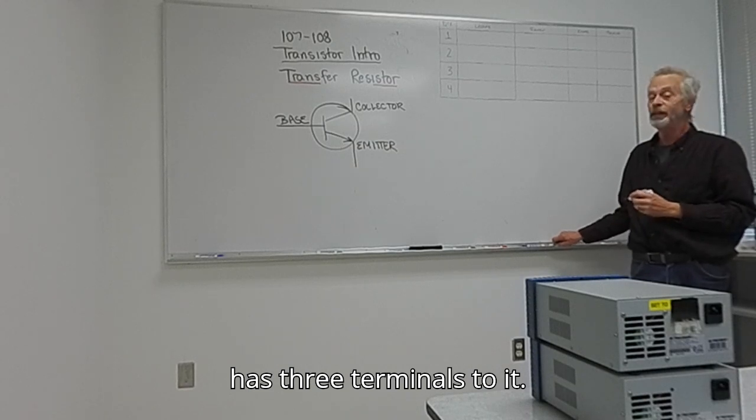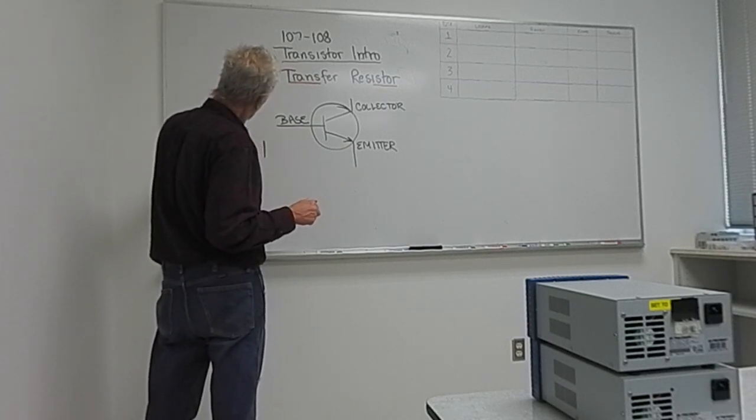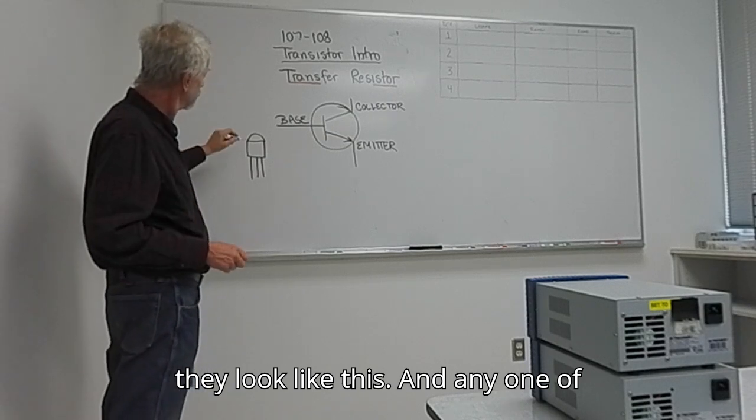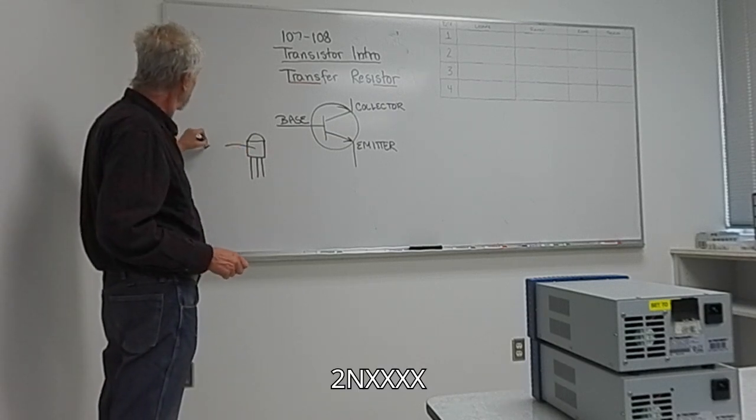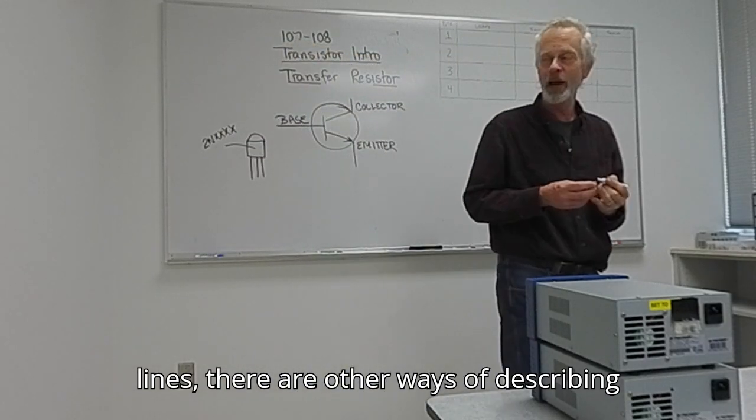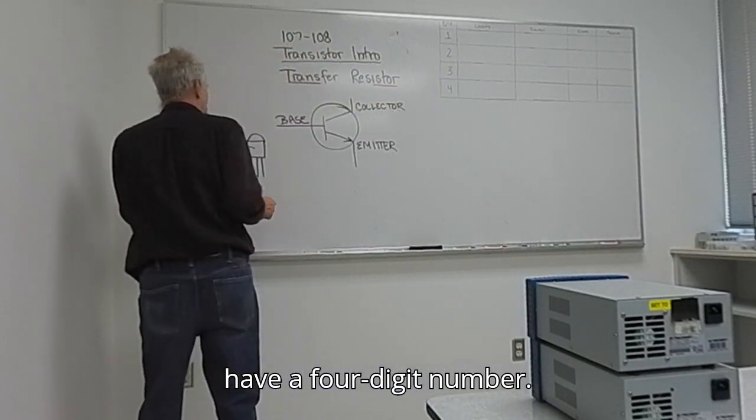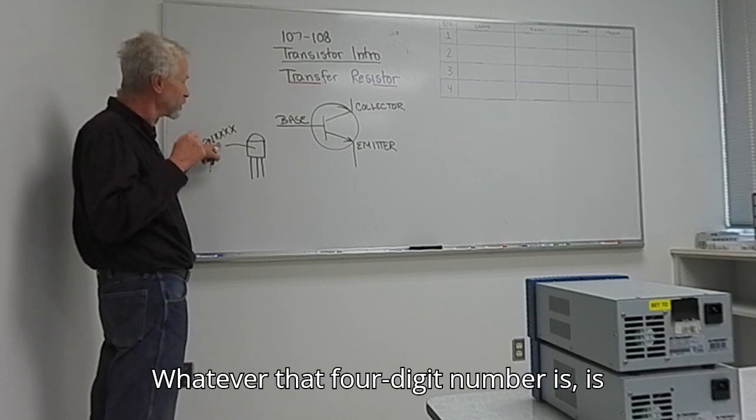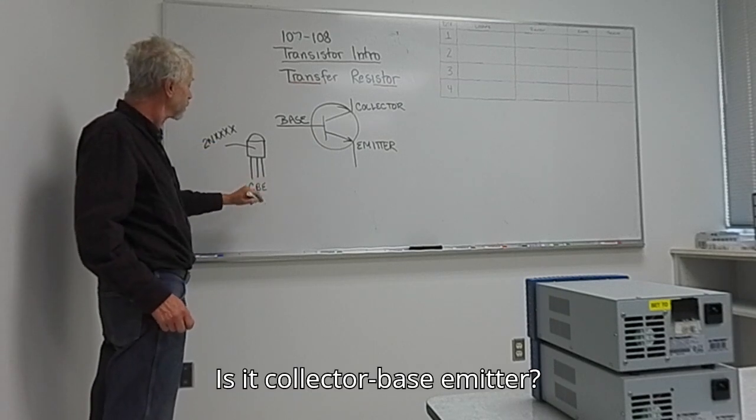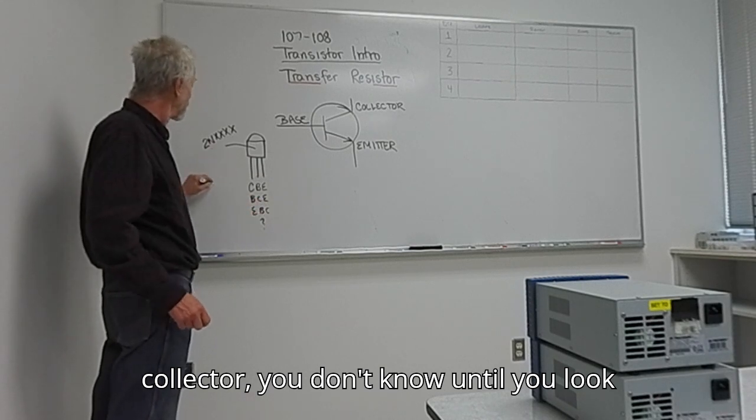Transistor has three terminals to it. In person, they look like this. And any one of them will have a 2N followed by a four-digit number. 2N indicates typically a transistor. Whatever that four-digit number is, you have to look into the data sheet to figure out if it's collector-base-emitter, base-collector-emitter, or emitter-base-collector. You don't know until you look at the data sheet.